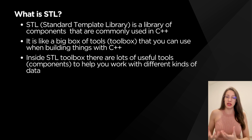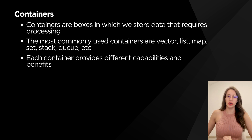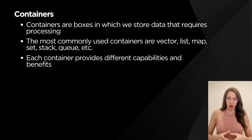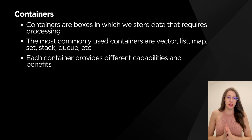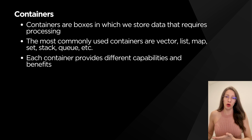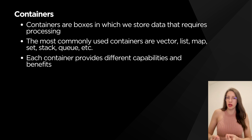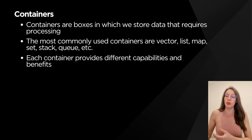Let's break down what is inside this STL toolbox. The first important part of STL are containers. You can understand containers as boxes where you can store the data that requires some processing. In STL, we have many different types of containers — some of them are vectors, lists, maps, and so on. All of these containers have different purposes and capabilities, and we are going to cover each one of them in a separate video in more detail.